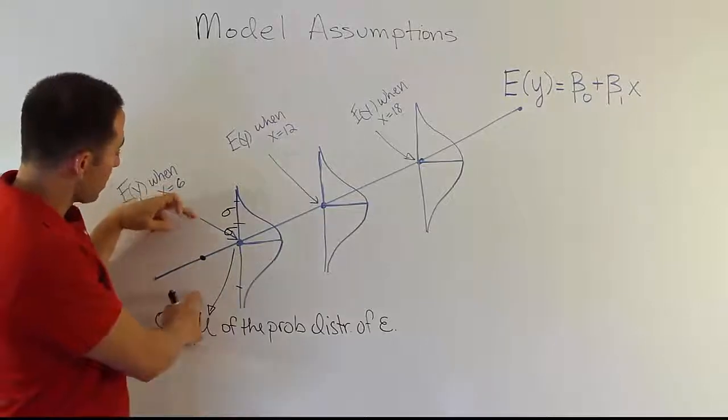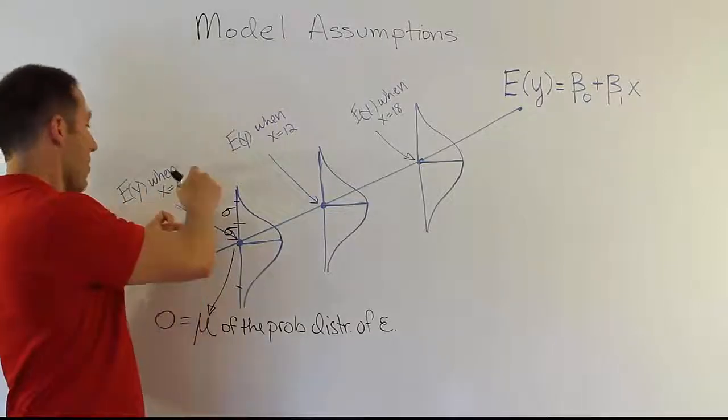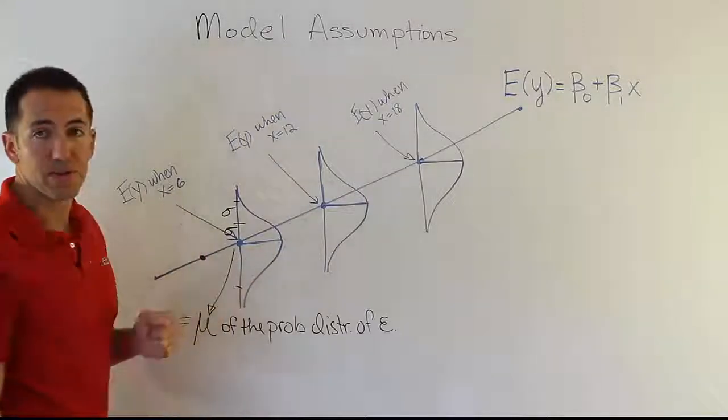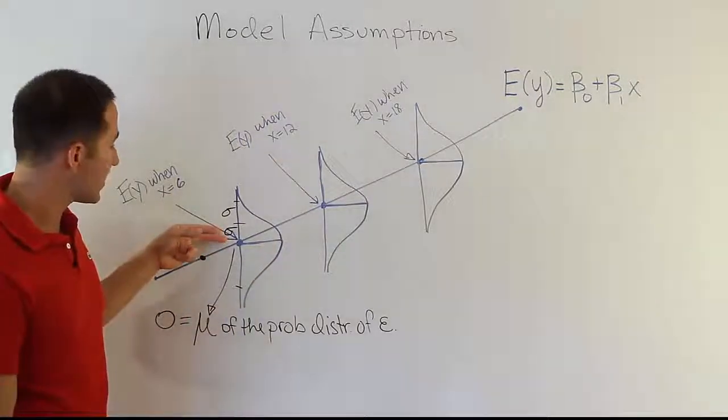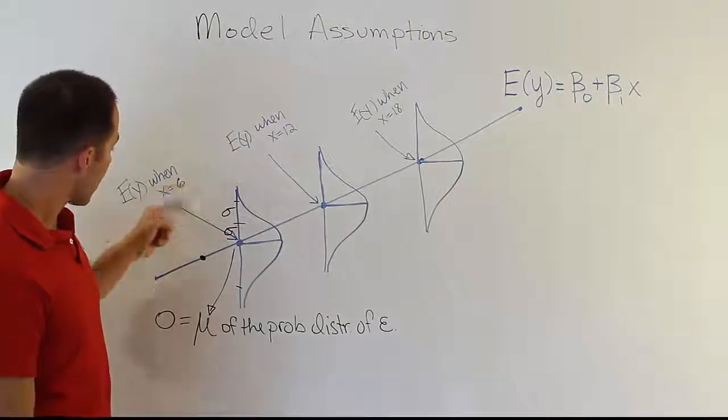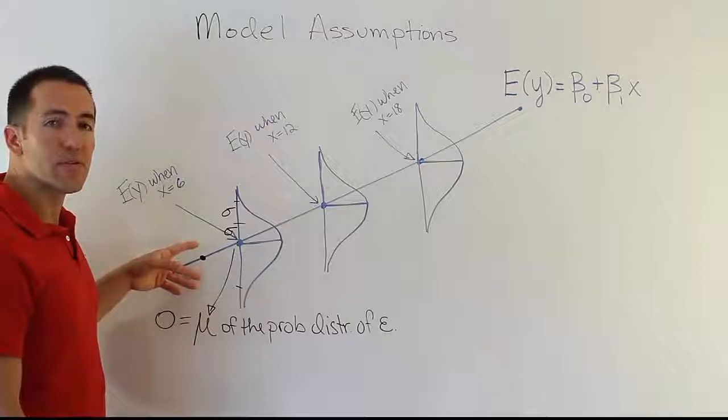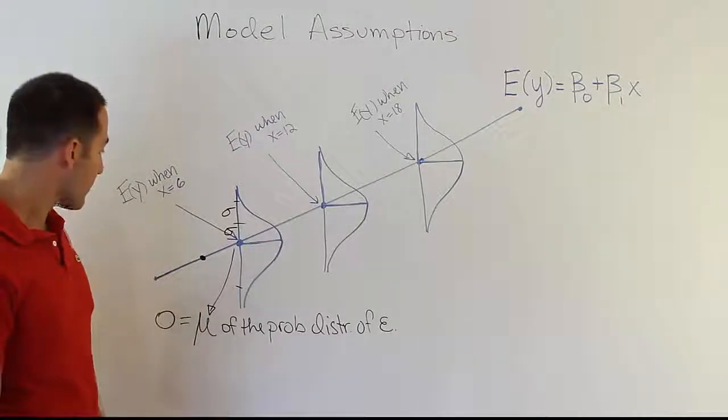So you know that the probability that you get way above that or way below that is going to be very small because we'll have this bell-shaped distribution. So depending on how large this standard deviation is, you'll be able to figure out how far away you're likely to observe actual values in the real world compared to your actual predicted value.